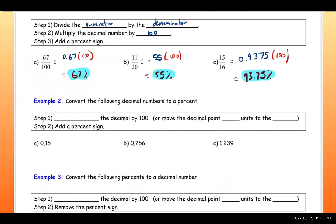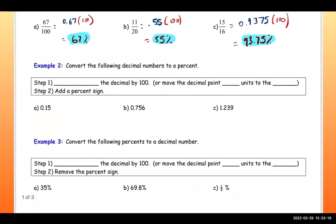Moving on: convert the following decimal numbers to a percent. Step one is to multiply the decimal by 100, or move the decimal point two units to the right. Then you add a percent sign.